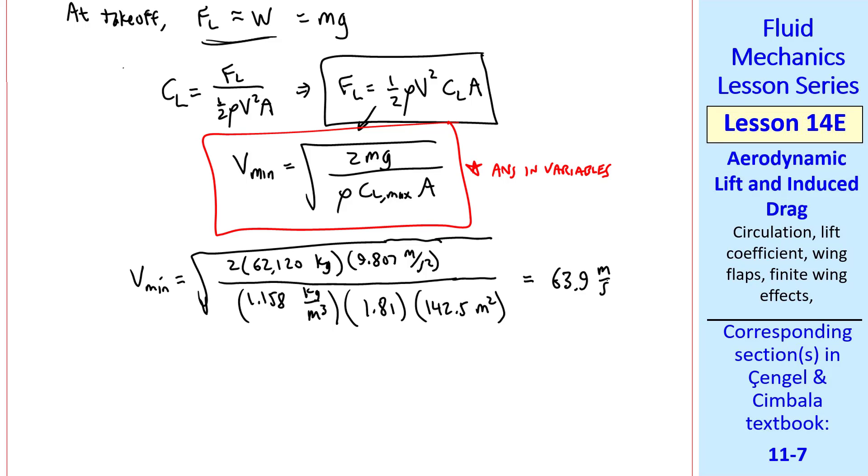I get 63.9 meters per second, which is about 230 kilometers per hour, or 143 miles per hour. This is the minimum takeoff speed. At any speed below this value, even with this maximum CL, our lift would be smaller than our weight, and we'd never be able to take off. This is why runways are long. The planes need enough distance to accelerate up to this minimum speed. On aircraft carriers, they have to use a kind of slingshot mechanism and afterburners to achieve this minimum speed in a very short length.